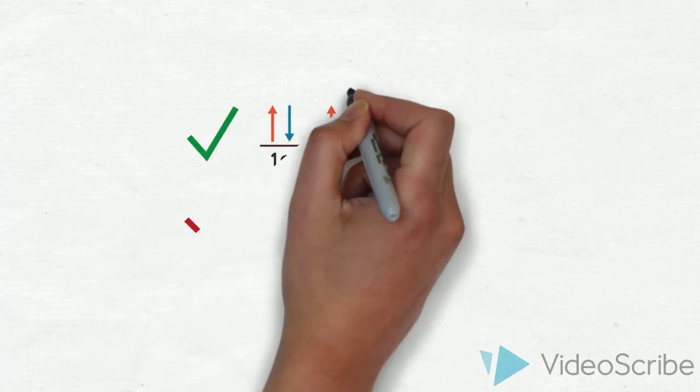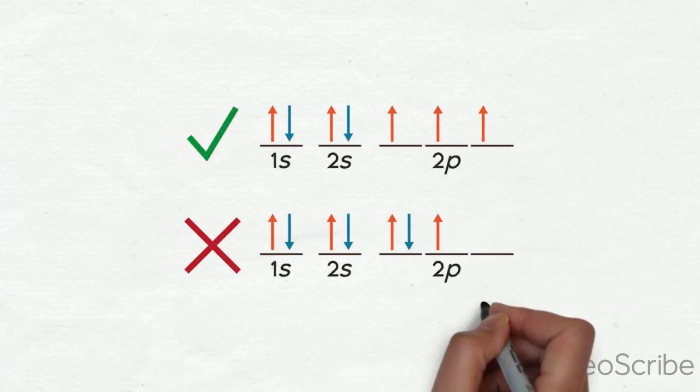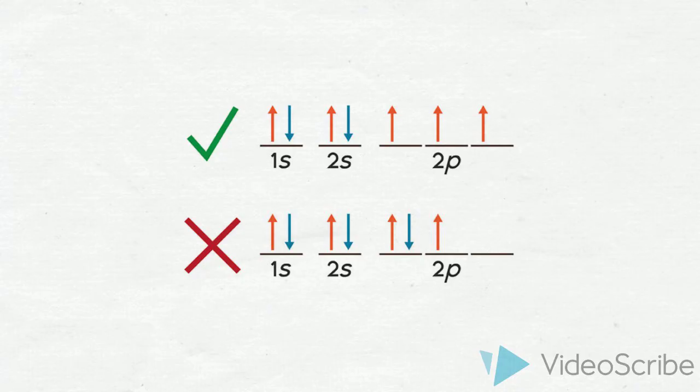The first line is correct because all orbitals have an electron before being paired. The second line is incorrect because the electrons are paired before each orbital has an electron.